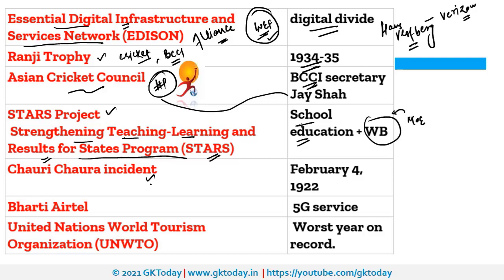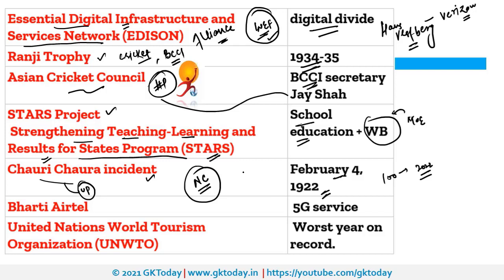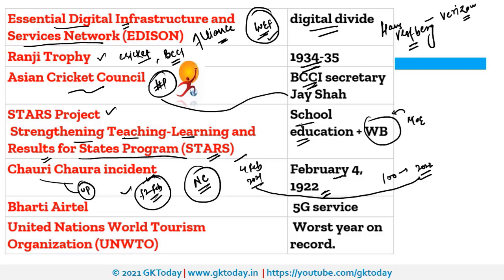The Chauri Chaura incident refers to a place in Uttar Pradesh where, during the Non-Cooperation Movement on 4th February 1922, Indian people clashed with the British. On the completion of 100 years — which falls in 2022 — a centenary event will start from 4th February 2021 and continue for one year. Because of the violence in this incident, Mahatma Gandhi stopped the Non-Cooperation Movement on 12th February.